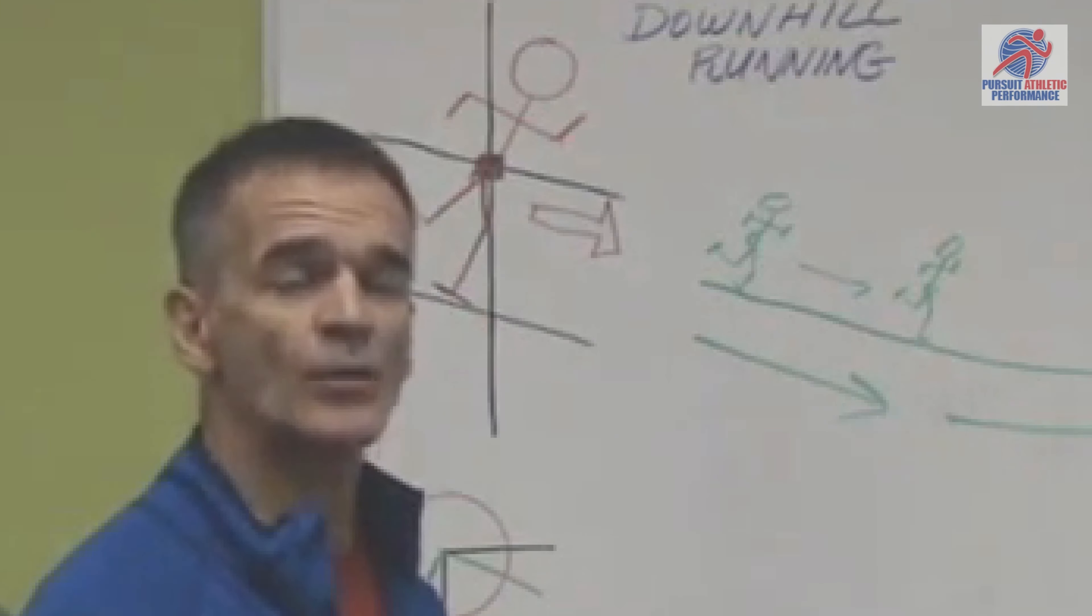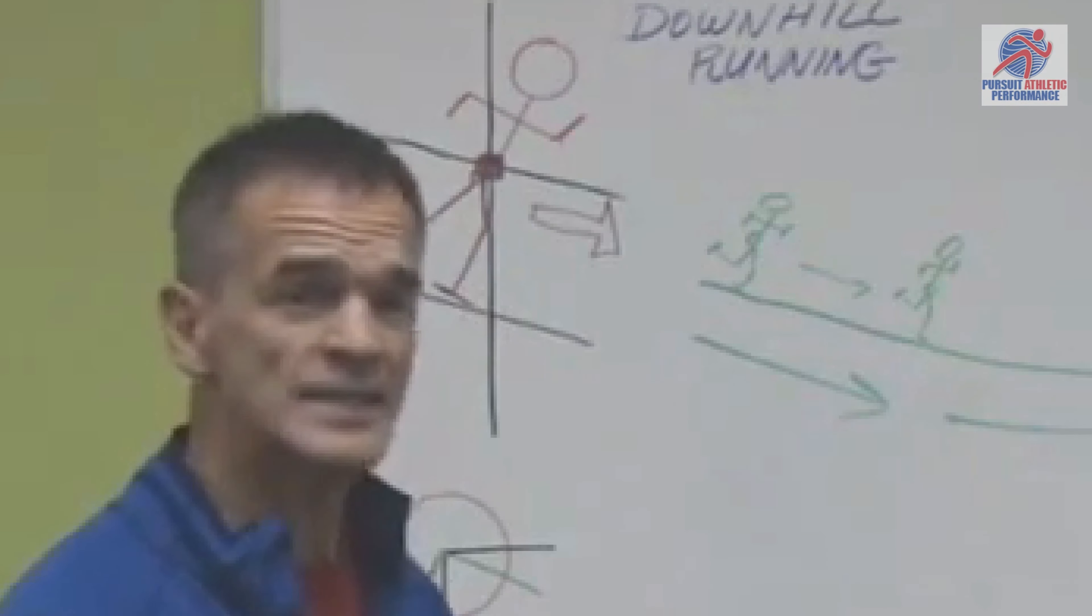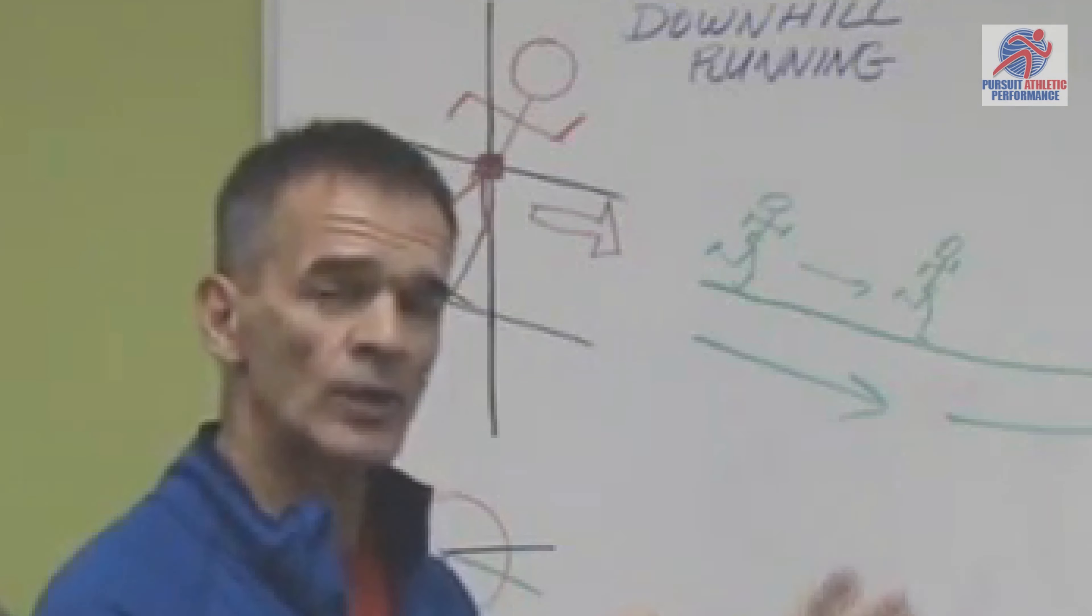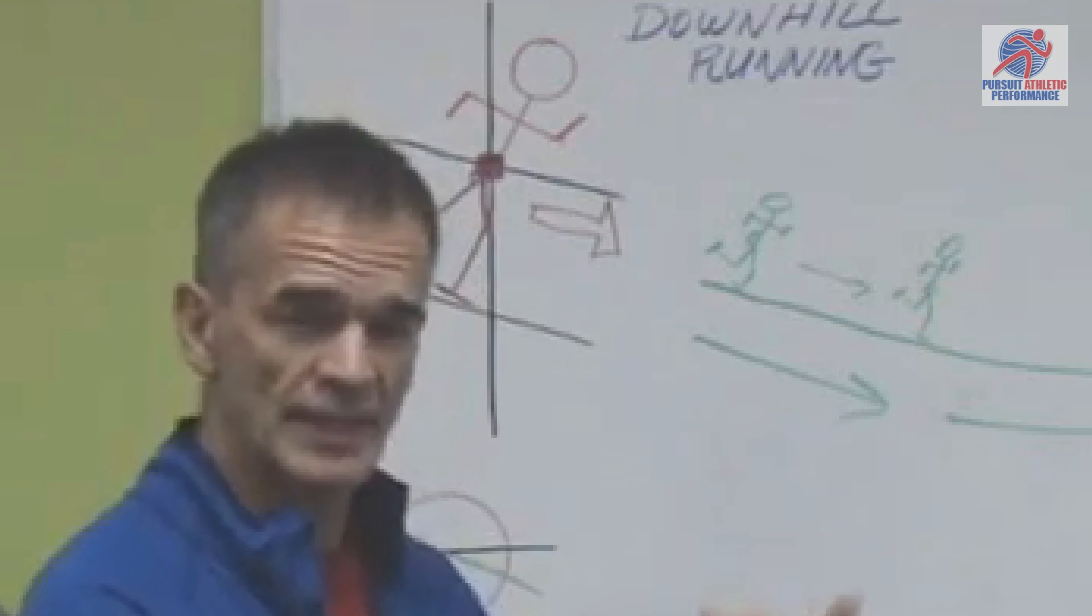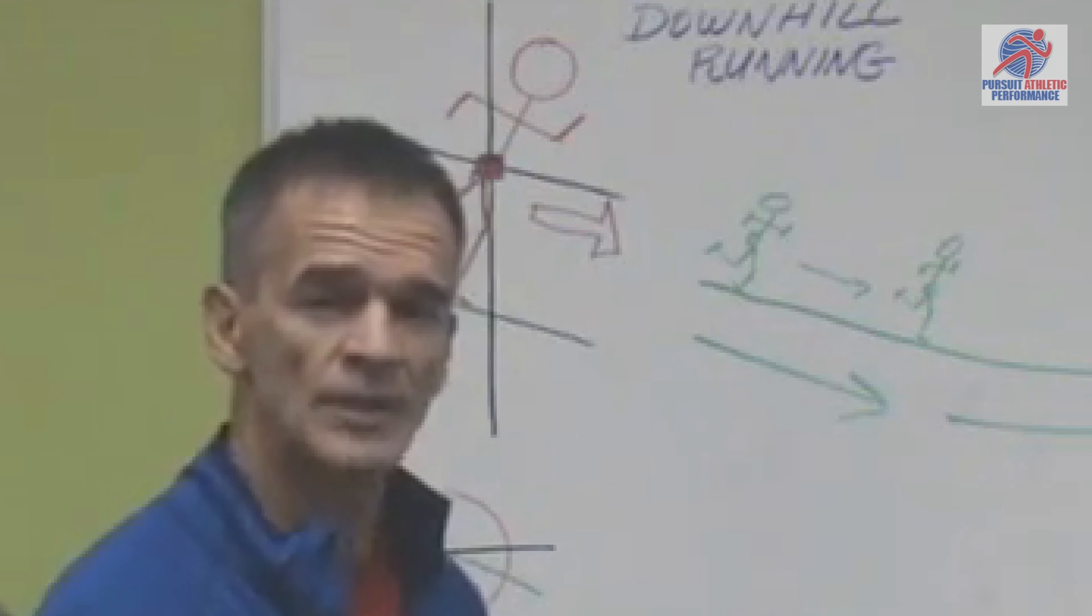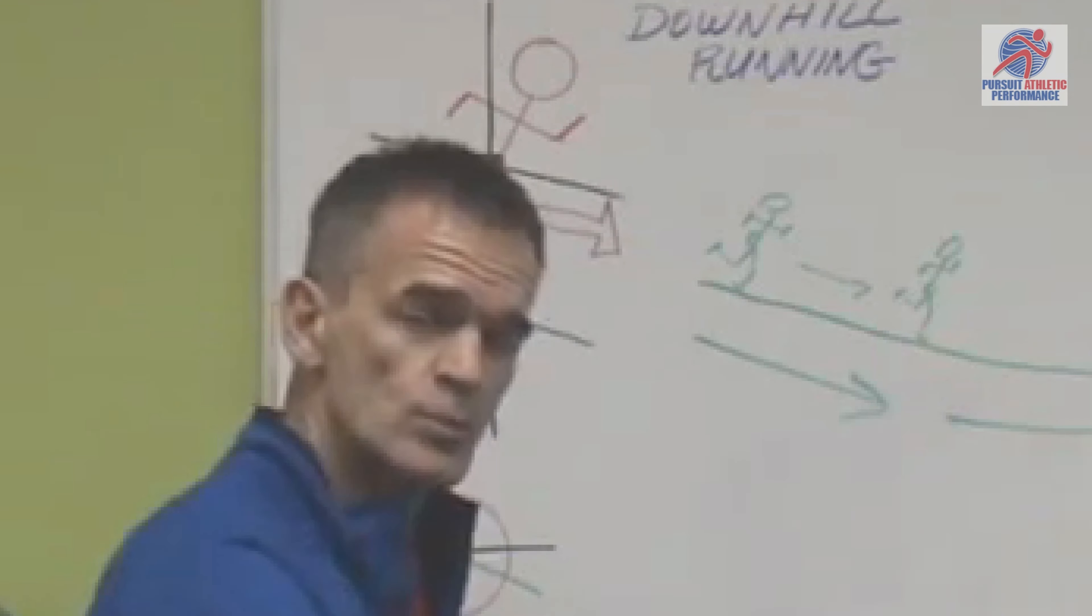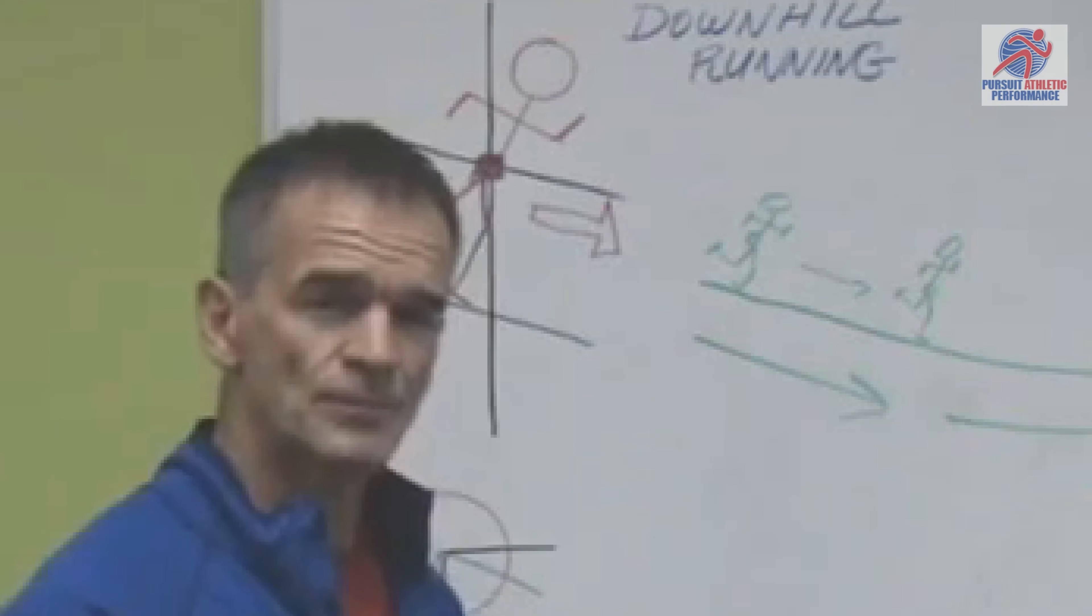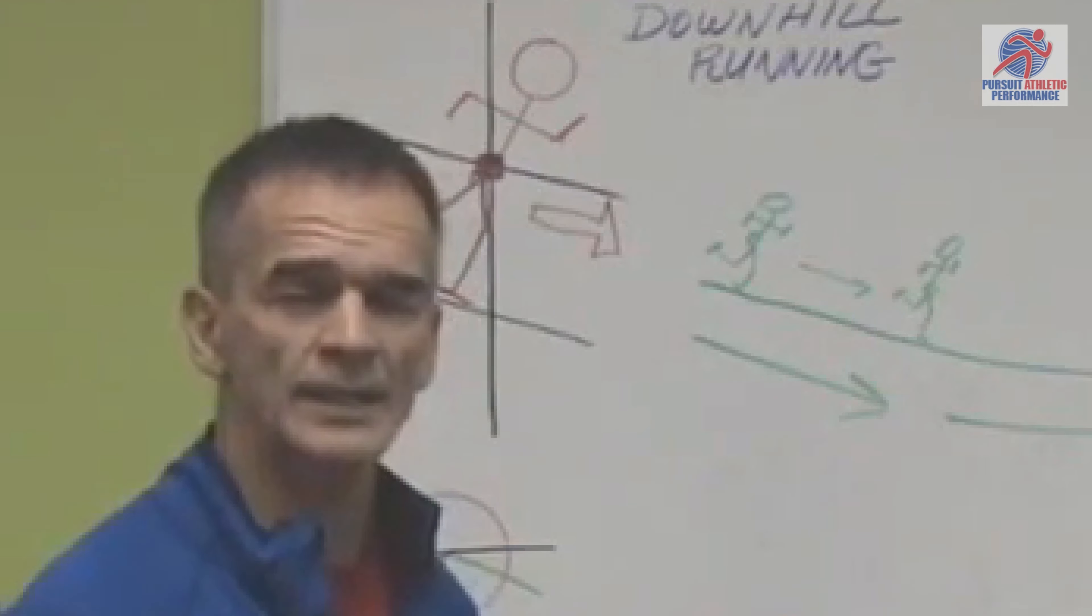So, the idea with these downhill sessions inside the Get Fast plan is to ideally go to an area where you've got a softer surface. I love golf courses. If you can get on the fringe and get away from the guys with the swinging clubs, you can find some really nice gentle slopes to practice and just learn how to let your feet catch up with your falling body.